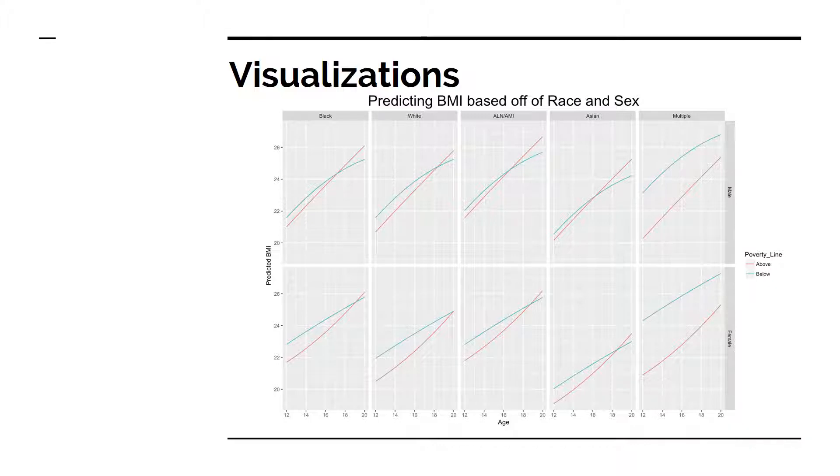First, the general trend shows average BMI to be increasing across all groups. Also, it's important to note that compared to all other race levels, Asians on average have slightly lower BMIs.